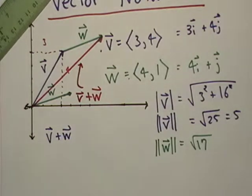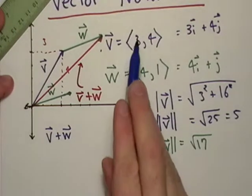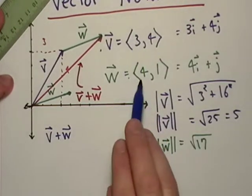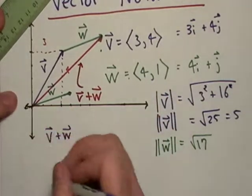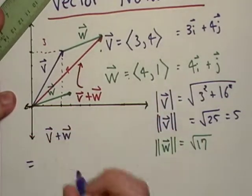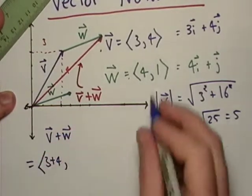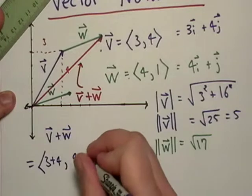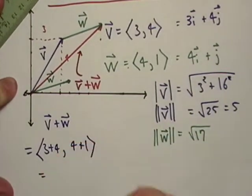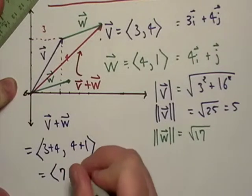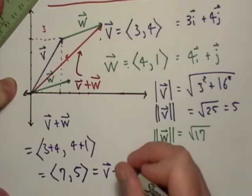If we wanted to do this algebraically, we add the horizontal components and the vertical components separately. We go <3 + 4, 4 + 1>. That gives us <7, 5> equals v plus w.